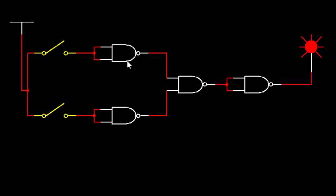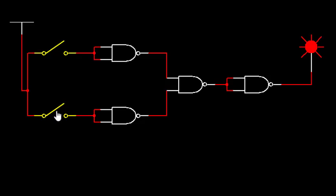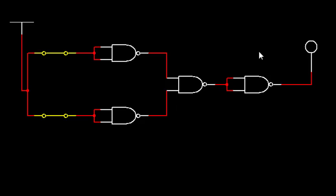Now we see NAND as NOR gate. Here we require four NAND gates. Running: 0 0 output is 1; 1 0 output is 0; 0 1 output is 0; and 1 1 output is 0. The output is high only when both inputs are 0 0, which is exactly how the NOR gate works.